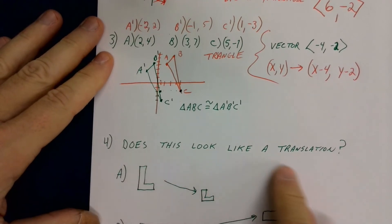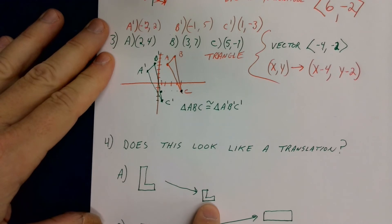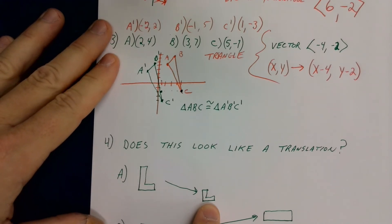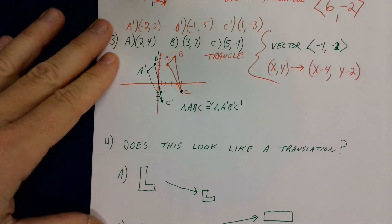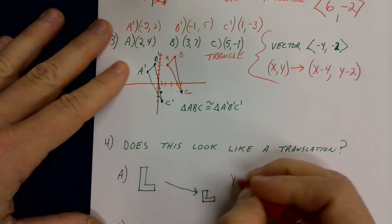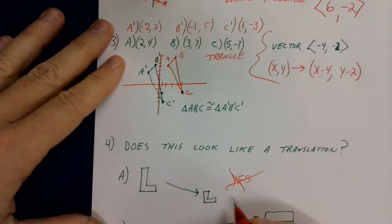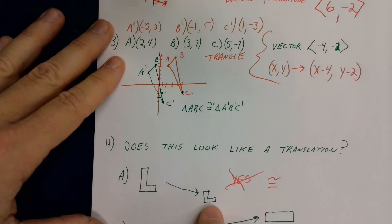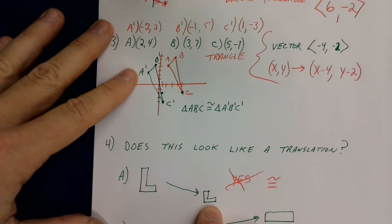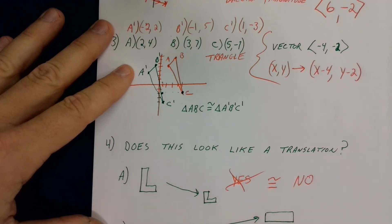So down here. Does this look like a translation? So I've got this shape right here, and it slid all the way over here. So does it have a direction? Yes, it definitely went in a certain direction. Good deal. Did it go for a certain distance? Yes, it went for a certain distance. So you're like, yes! Right? Yeah. No. It is not. Because in order for it to be a translation, the two shapes have to be congruent. And this one also changed size. So this should be a big ol' honkin' no. The reason it's no is because the two shapes aren't congruent.